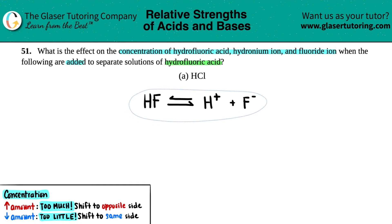And if we just see that up top here, that's what they're asking for. What happens to the concentration of hydrofluoric acid? That's HF. Hydronium ion, which is H plus, and fluoride ion, which is F minus.